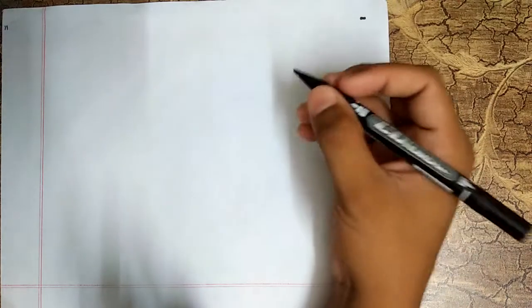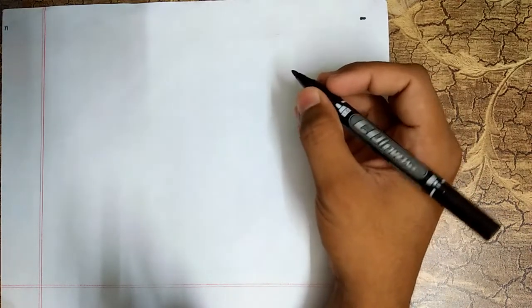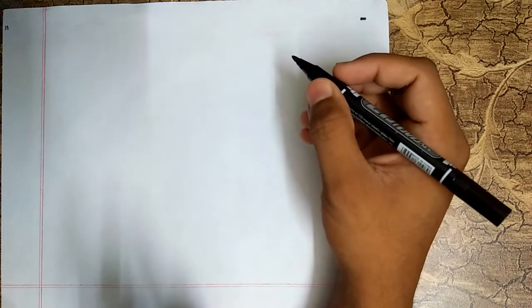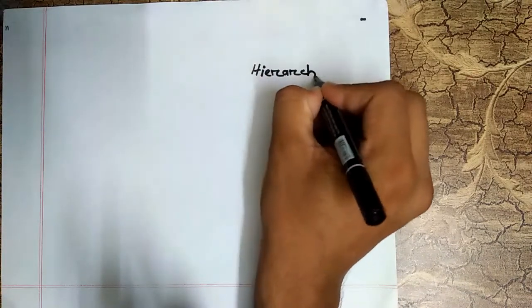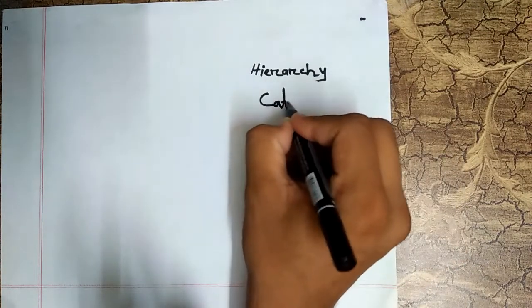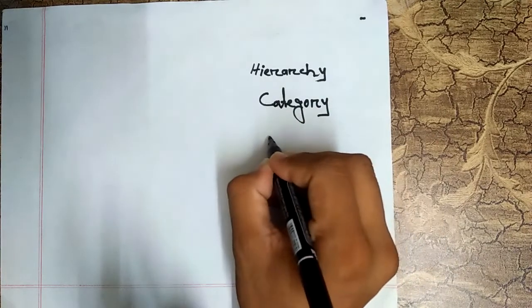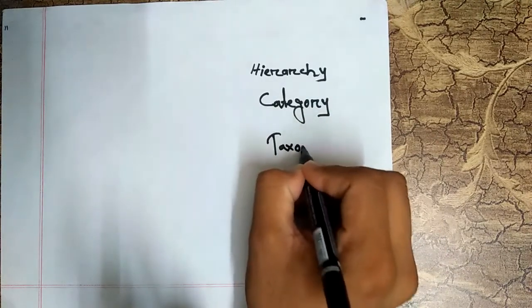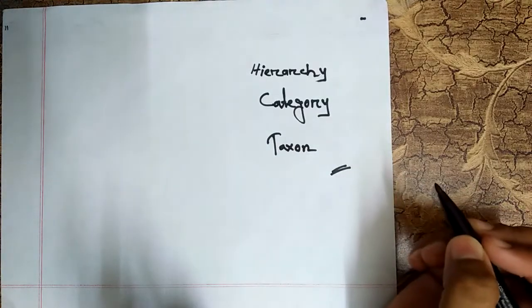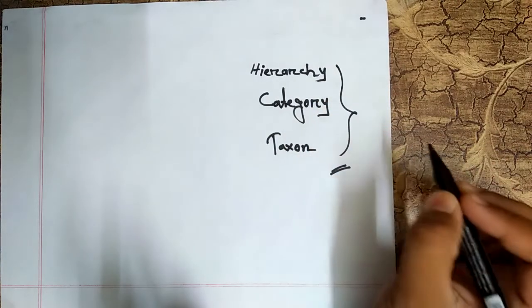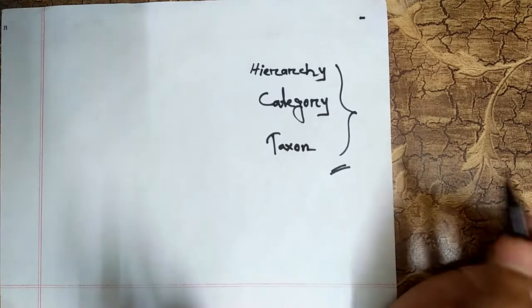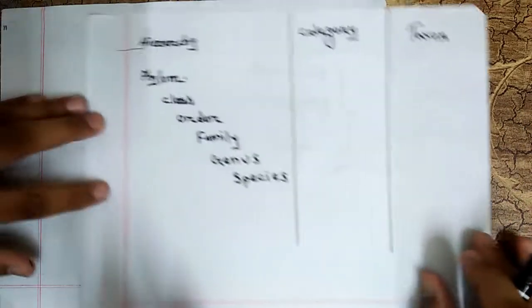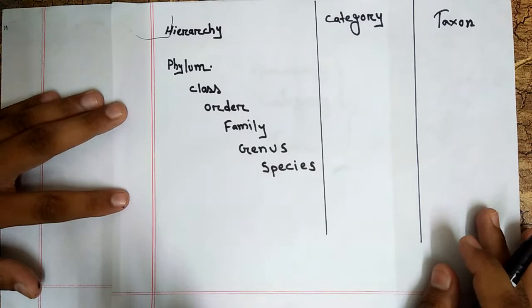I will discuss a confusing topic of taxonomy. There are some confusing terms in taxonomy which are hierarchy, category, and taxon. I will make a clear conception about these terms and I will make a differential chart of them. So let's move on — what is category, what is hierarchy, and what is taxon?